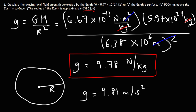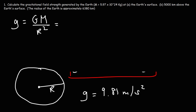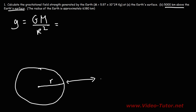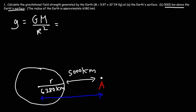That's how you calculate the gravitational field strength at the Earth's surface. Now let's move on to Part B: how do we calculate the gravitational field strength 5,000 kilometers above the Earth's surface? The r value is going to change. We want the field strength at a point 5,000 km above the surface, and the Earth's radius is 6,380 km. So the r value is the sum: 6,380 plus 5,000 equals 11,380 kilometers.